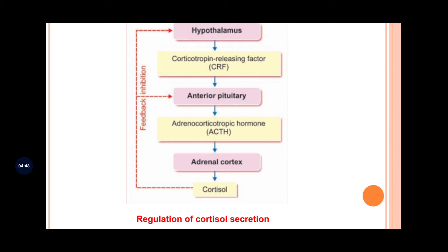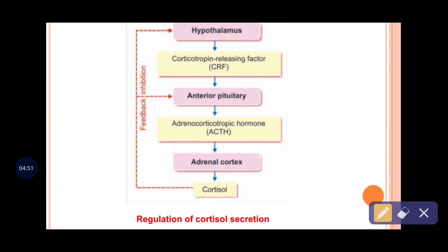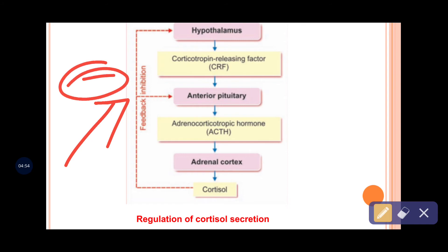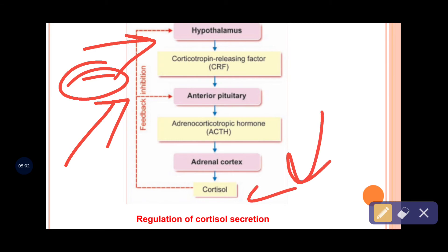So if there is excess cortisol, it will negatively inhibit the anterior pituitary and the hypothalamus, decreasing the release of ACTH and CRF, and thereby decreasing cortisol secretion.